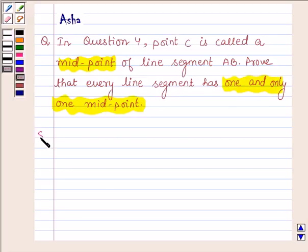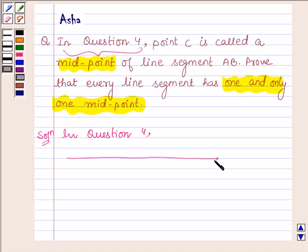Let us now begin with the solution. In question 4, we were given a line segment AB such that point C lies on AB, such that we have AC is equal to CB. And this implies AC is equal to half of AB.